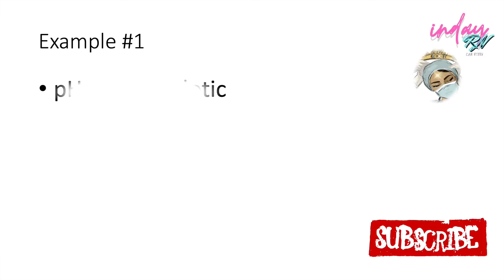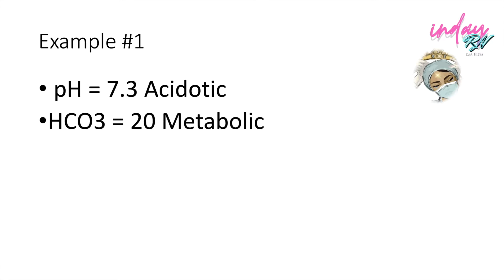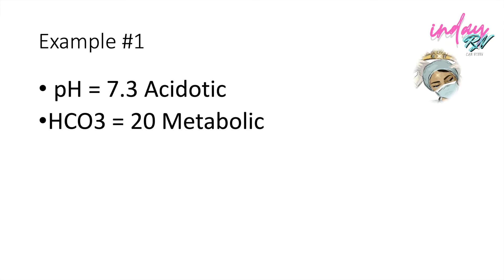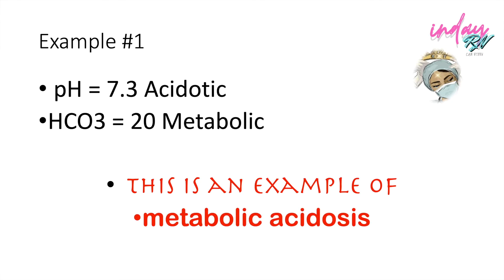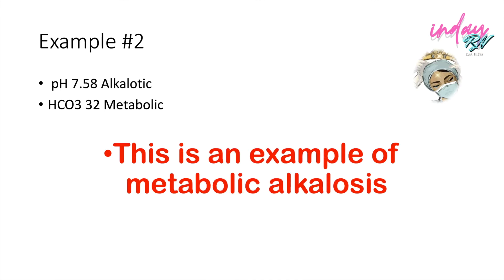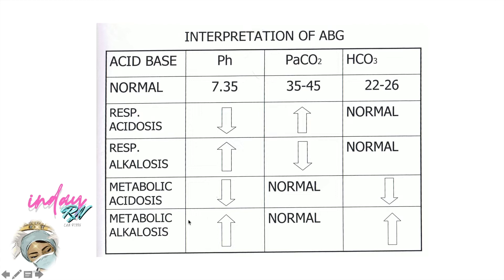Example number one: we have pH 7.3 — that is acidosis. And HCO3 is 20 — that is metabolic. Always remember your normal levels. So this is an example of metabolic acidosis. Next example: if pH is 7.58 — that is alkalotic, because it is high. And if the HCO3 is 32 — that is metabolic. Therefore, this is an example of metabolic alkalosis, because their results are high.